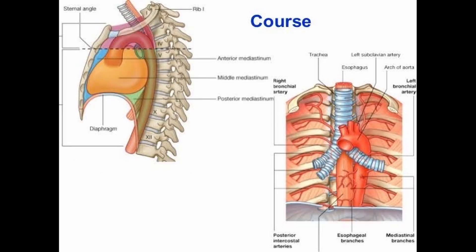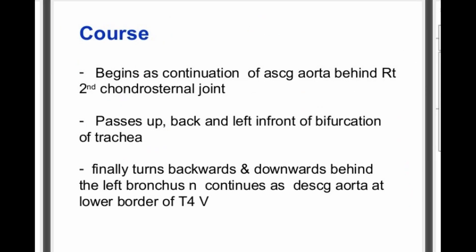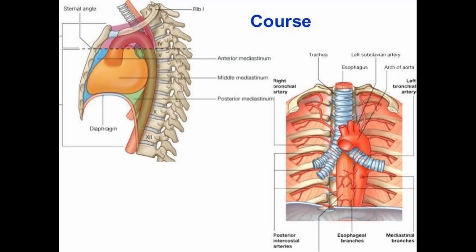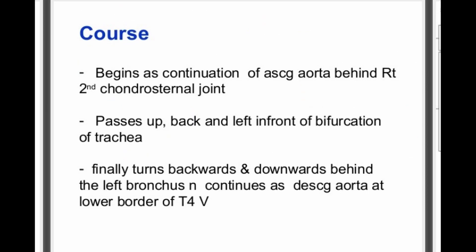Now we discuss the course of the arch of aorta. It begins as a continuation of the ascending aorta behind the right second costo-sternal joint, then passes up, back, and left in front of the bifurcation of the trachea. It then turns backward and downward behind the left bronchus and continues as the descending aorta at the lower border of the T4 vertebra.